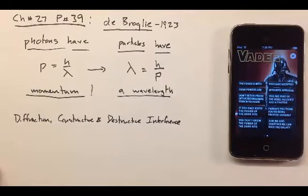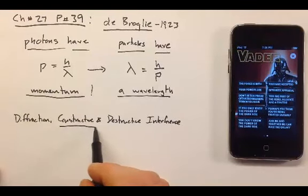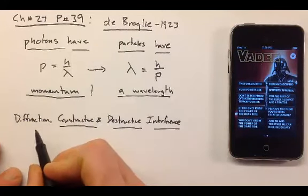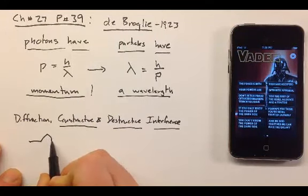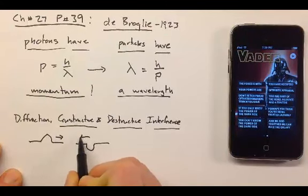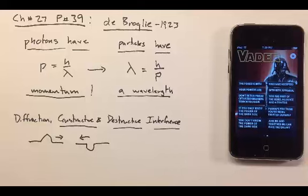But particles can have a wavelength. Now what do we mean by the wavelength of a particle? Well, if a particle has a wavelength, it can do anything that another wave could do. Like, it could constructively and destructively interfere with itself. Much like how if you have a wave going this way on a string, and a wave going this way on a string, they can cancel each other out.